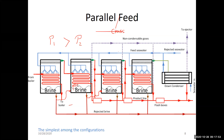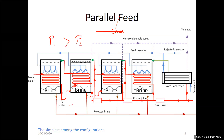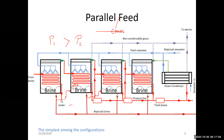When brine from a high-pressure effect at P1 enters the brine pool of the next lower-pressure effect, some flashing occurs, producing flashed-off vapor. This makes use of the energy in the rejected brine by creating additional vapor that joins the formed vapor of that effect, improving unit productivity. Parallel cross feed therefore has slightly better performance than parallel feed because of this additional vapor generation by flashing.